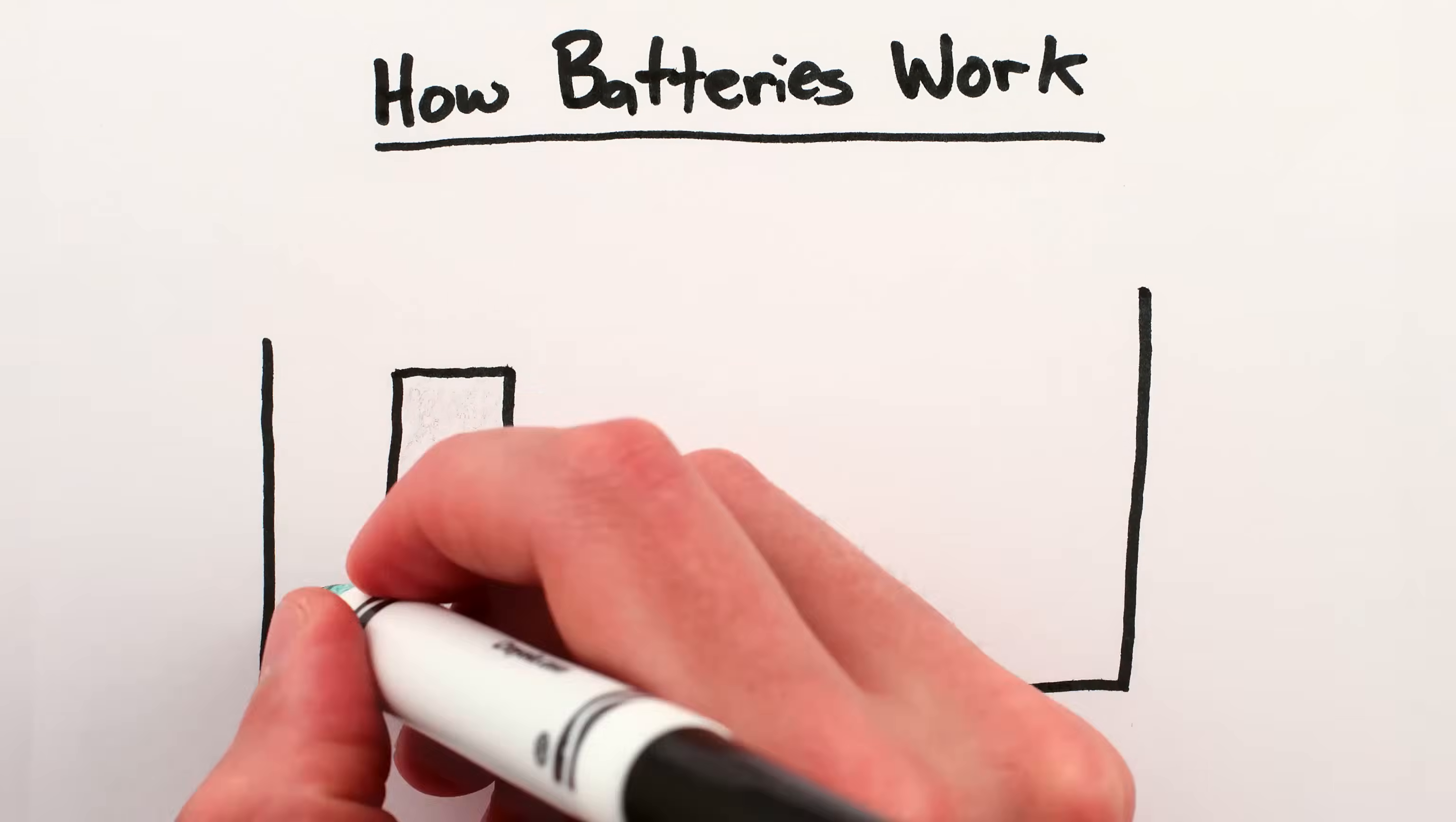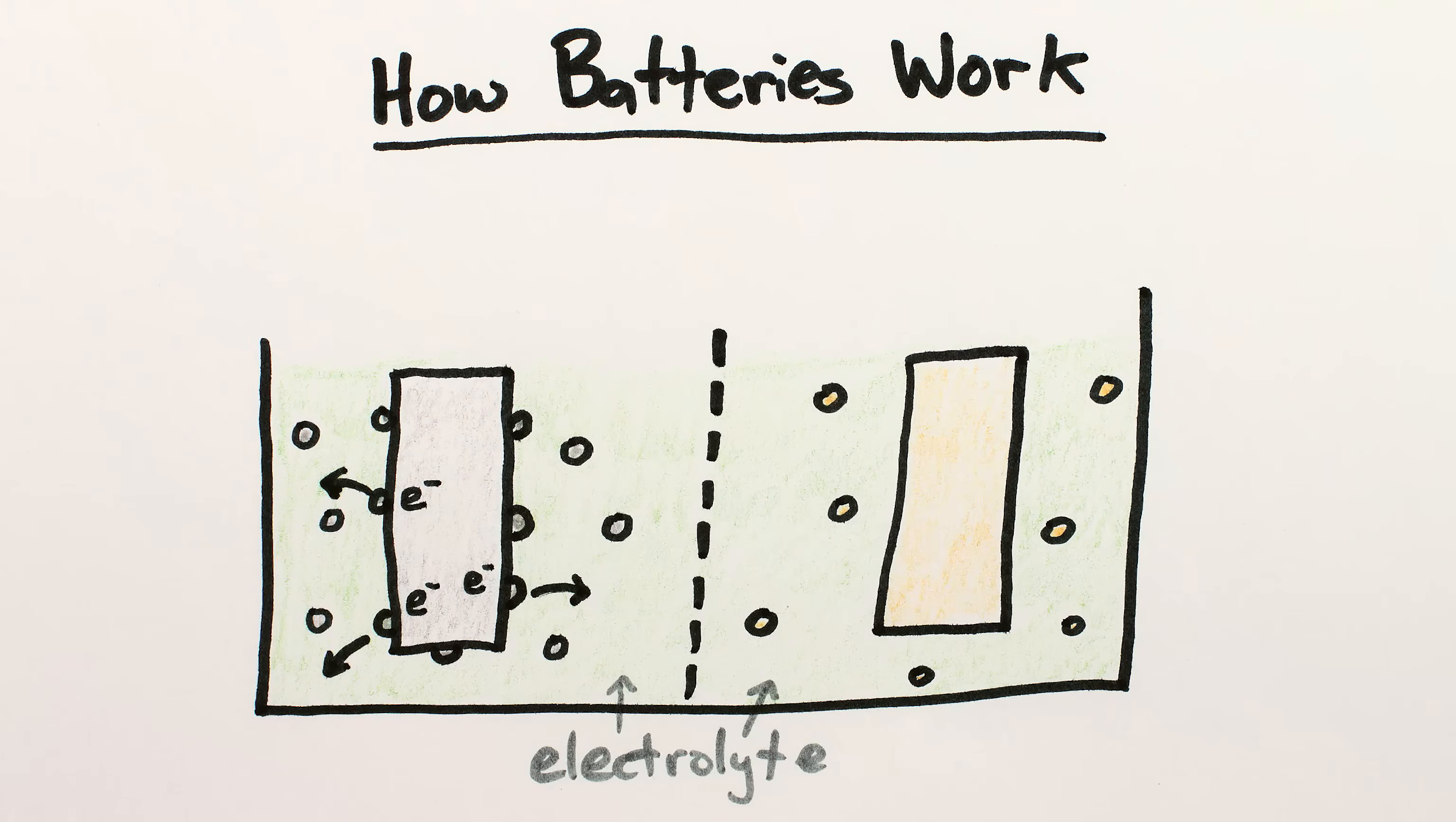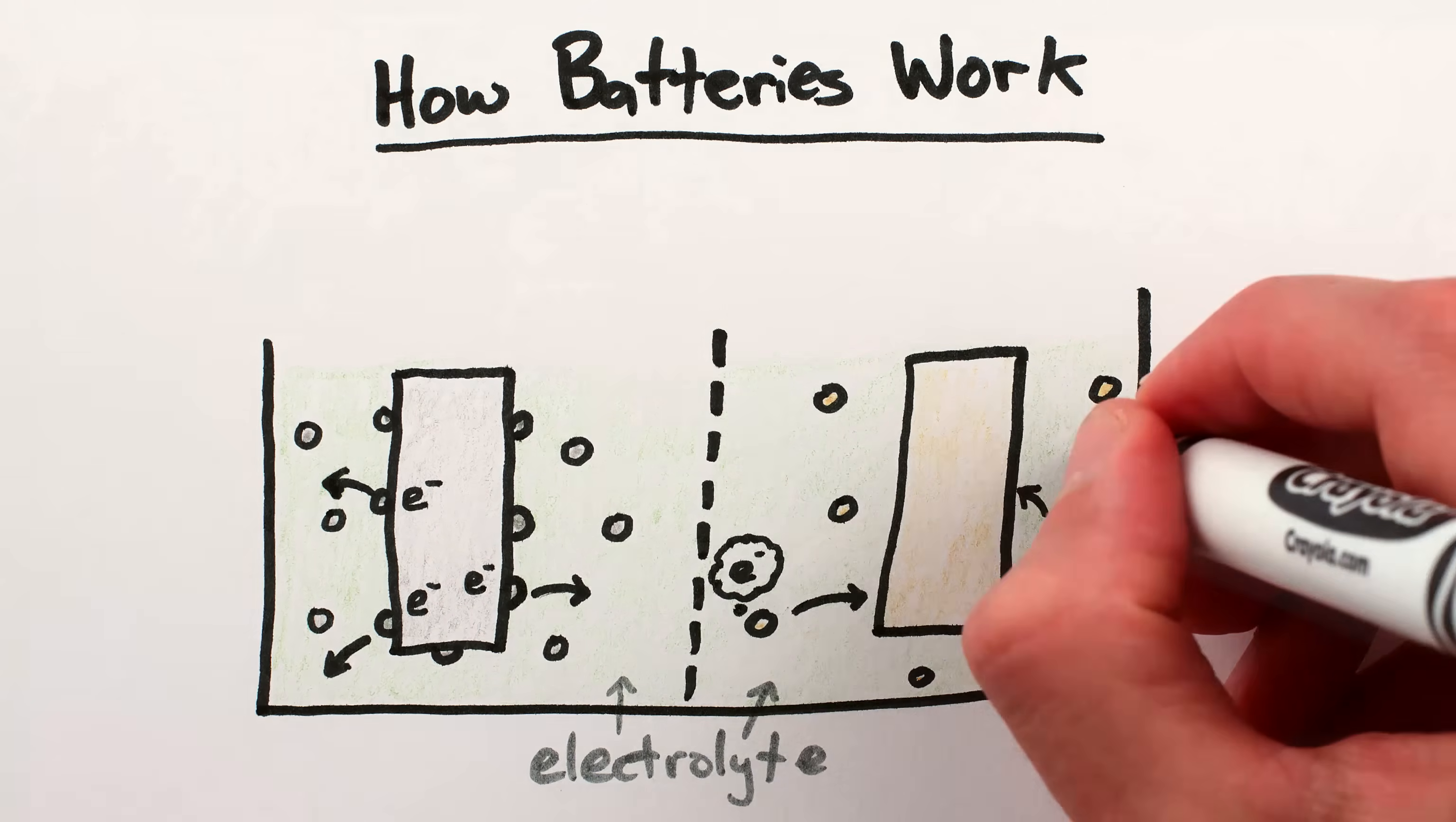Batteries are, in principle, fairly simple. Take two partially dissolved metals, one whose atoms want to dissolve more and give up electrons, and one whose atoms want to deposit back on the solid bit, but need spare electrons to do so.